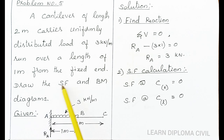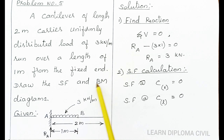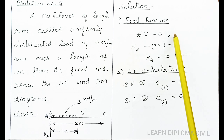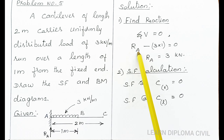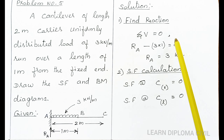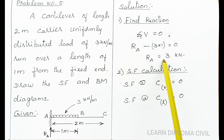To find the reaction, apply the vertical equilibrium equation: sigma V equals 0. The sum of all vertical forces gives R_A upward minus UDL downward equals 0. UDL value is 3 kN/m over a distance of 1 meter, so 3 into 1 equals 3 kN. Therefore R_A minus 3 equals 0, giving R_A equal to 3 kN.